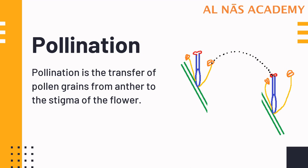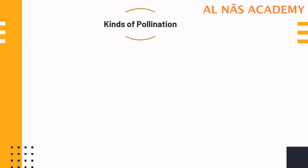Flowers are adapted for this purpose and they use external agents to achieve this pollination. But before we study about the external agents, let us first understand the kinds of pollination — how pollination is broadly classified.